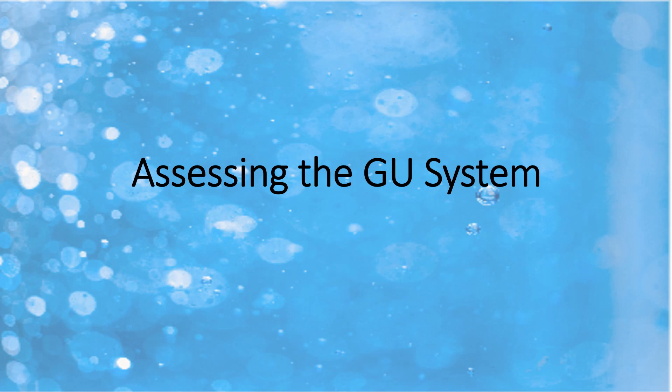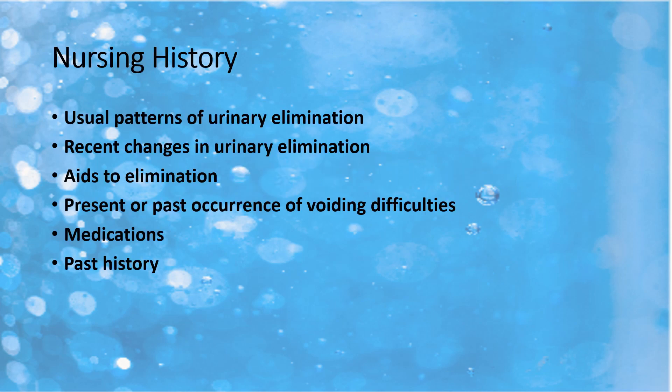Now we're going to move into how we assess the GU system. The first part of any nursing assessment is asking the patient questions related to their GU system. We want to ask about their usual patterns for urinary elimination — how often do they urinate and how much comes out? Has there been any changes to their urinary pattern? We also want to ask if they need to take any medications or do anything special to help them urinate. Some people cannot urinate if other people are around and can hear, or may need to push on their abdomen, or need water running. We need to know all of this.